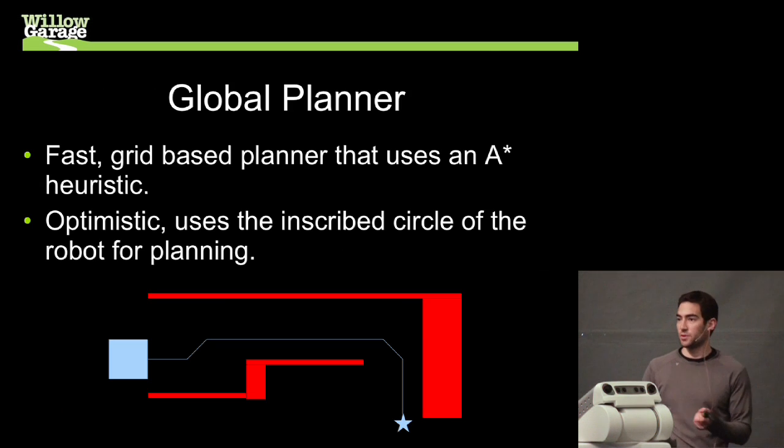For a global planner, we just use a grid-based planner that uses an A-star heuristic. And it's important to know that it's optimistic. So it's using the inscribed circle of the robot to plan. So there are actually cases where the global planner can tell the robot to do something infeasible because it is planning with just a circle.